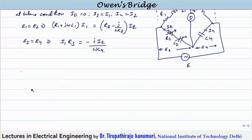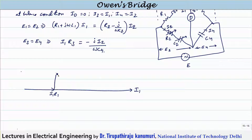For the phasor diagram, I am taking current I1 as my reference. We can calculate the value of E1 will be equal to I1 multiplied by R1. To this, we have to add j times ωL1 into I1 — that means it will be on the positive imaginary axis — giving the resultant value E1. We know E1 will be equal to E2.